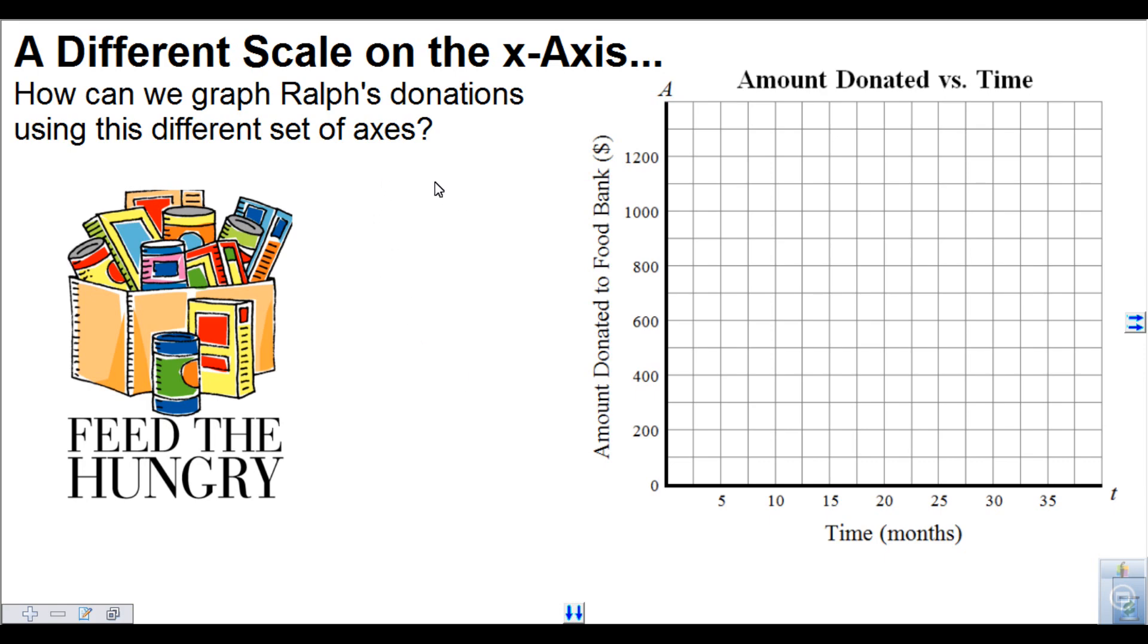So let's remind ourselves that Ralph started giving $100 and then it's $20 per month. Really you just need two points to draw a straight line. Now we already know the first point—he gave $100 at the very beginning. Now we need to come up with a second point.